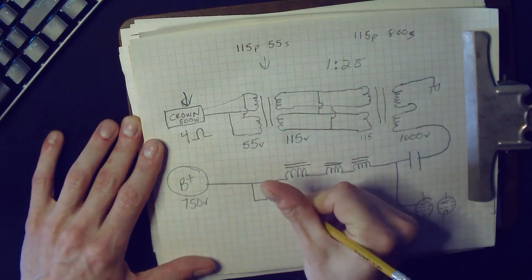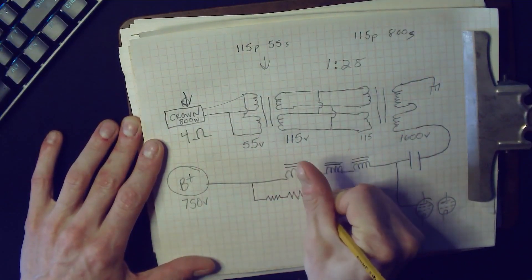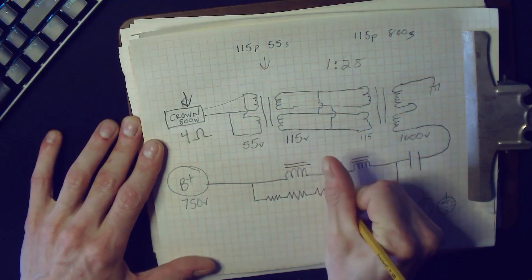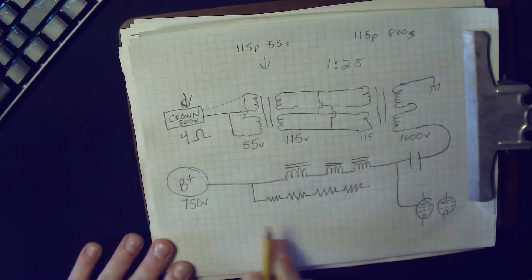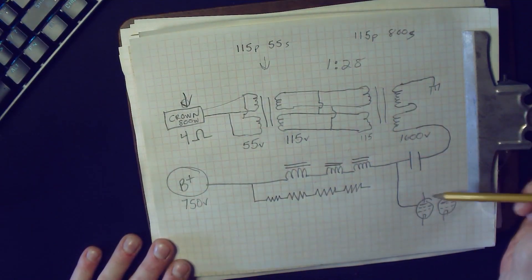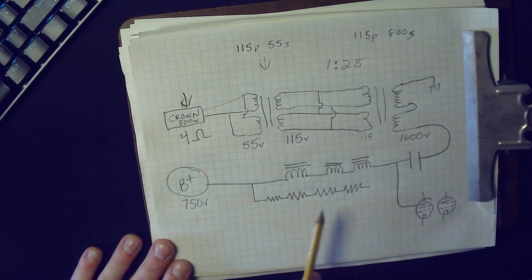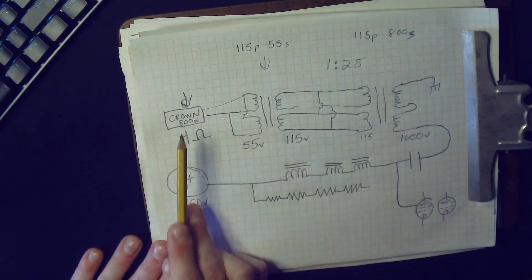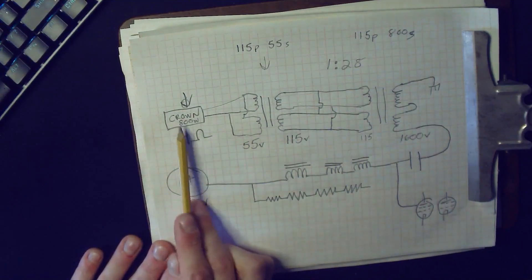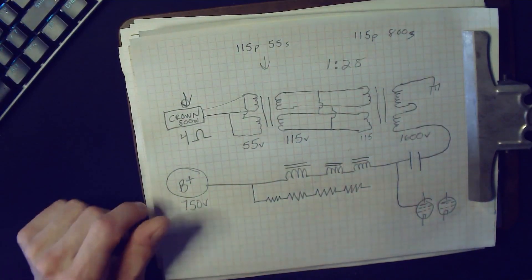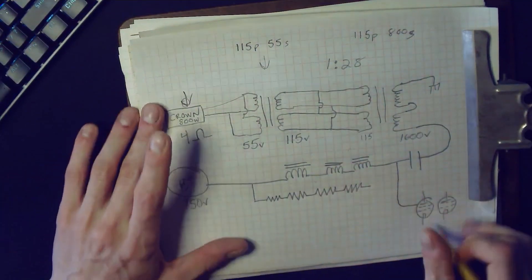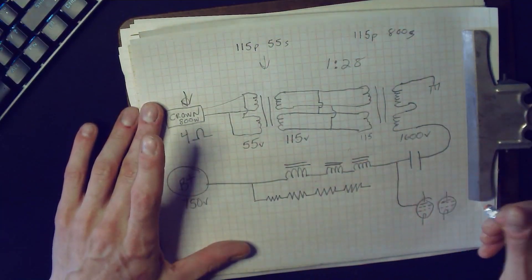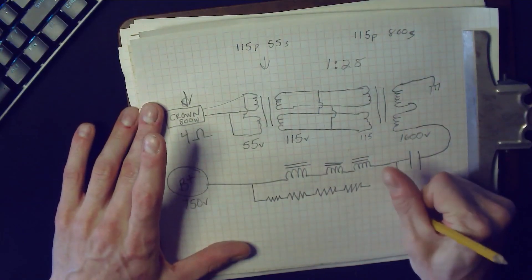Basically, all it is is we're going to use some series resistors here to create some taps. Now the total value of these resistors needs to equal about 3000 ohms—your modulating impedance of the finals—and it must be rated for at least half of the power that you're going to use to modulate the system.